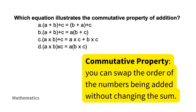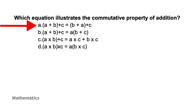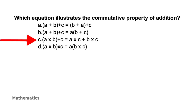The commutative property states that you can swap the order of the numbers being added without changing the sum. Option A swaps the order of a and b within the parentheses — this illustrates the commutative property. Option B suggests the distributive property. Option C also represents the distributive property. Option D shows the associative property of multiplication. Therefore option A is correct.